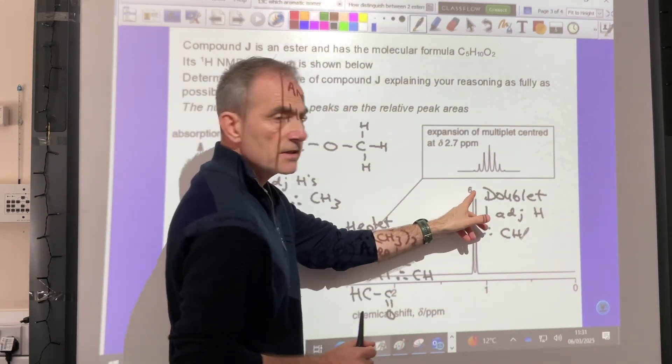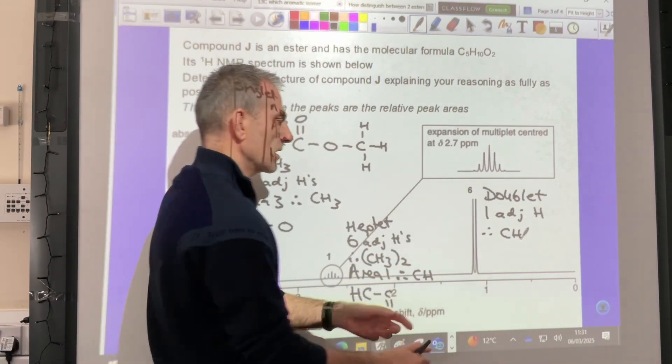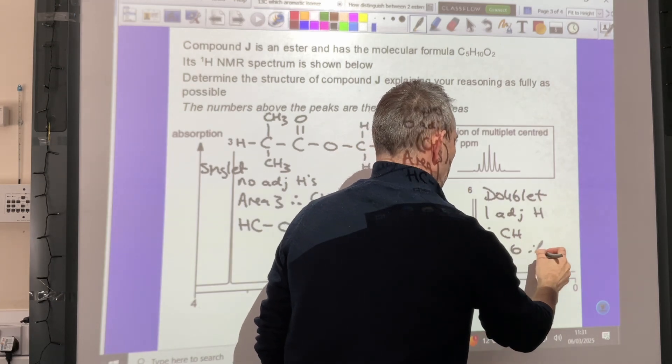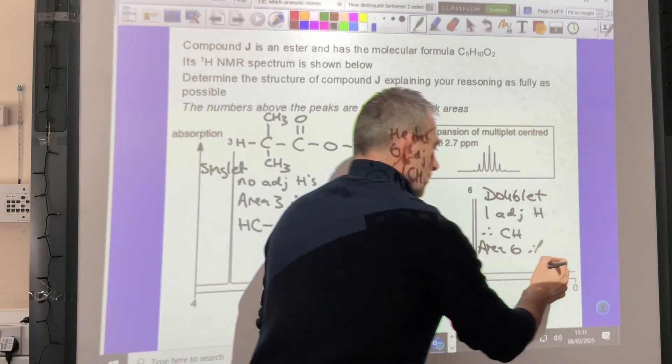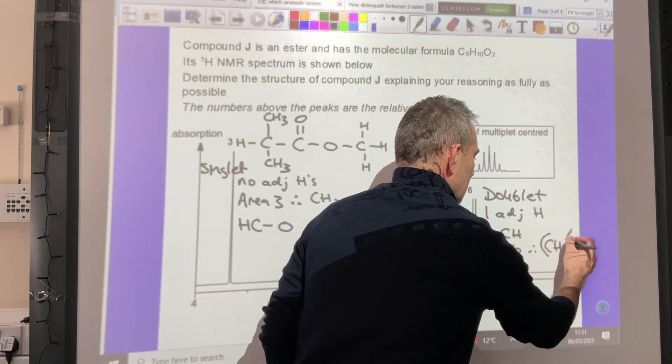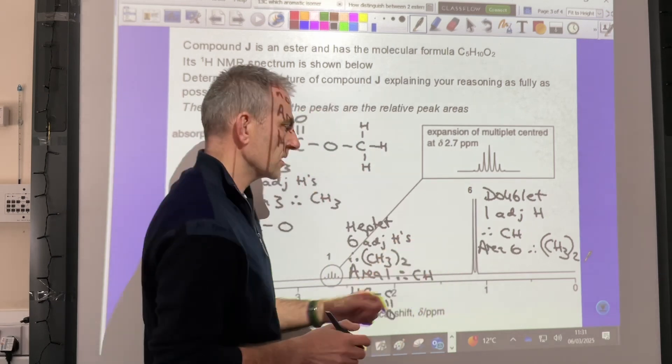The area is 6, so there's 6 hydrogens in the environment. So area 6, therefore. But remember, we can't have a CH6, so it's 2 equivalent CH3s. So it's CH3 twice. It's caused that signal.